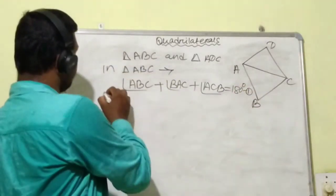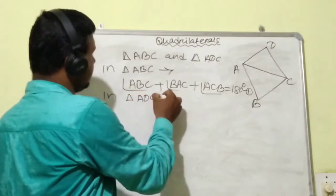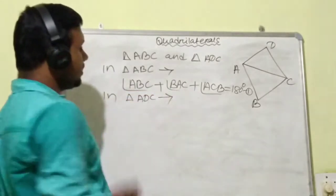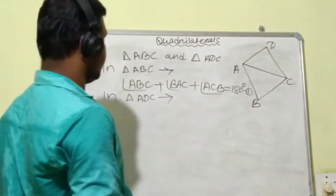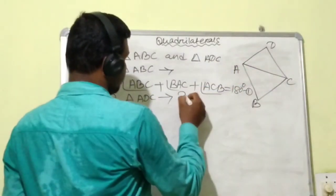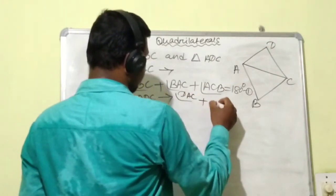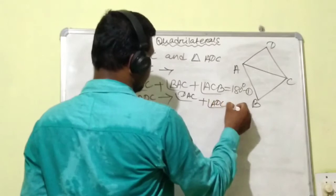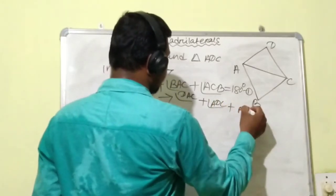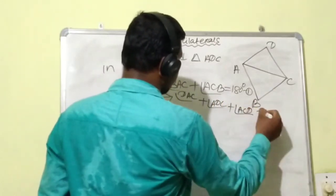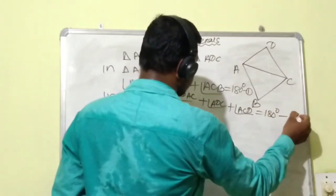Then, in triangle ACD, the sum of three angles is also equal to 180 degrees. That is angle DAC plus angle ACD plus angle ADC equals 180 degrees. This is equation 2.